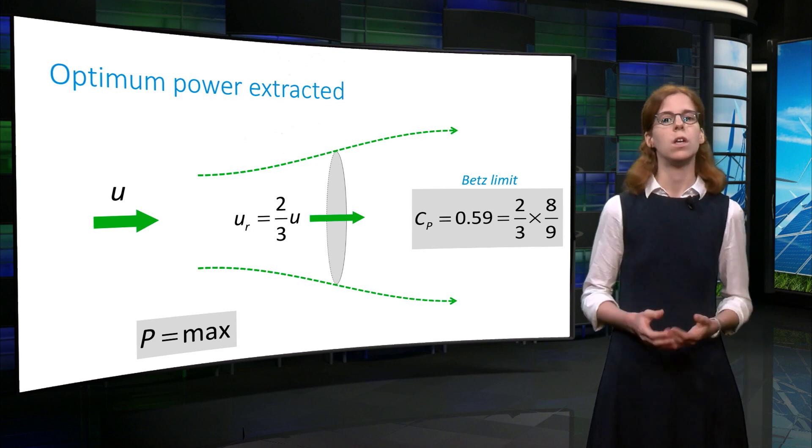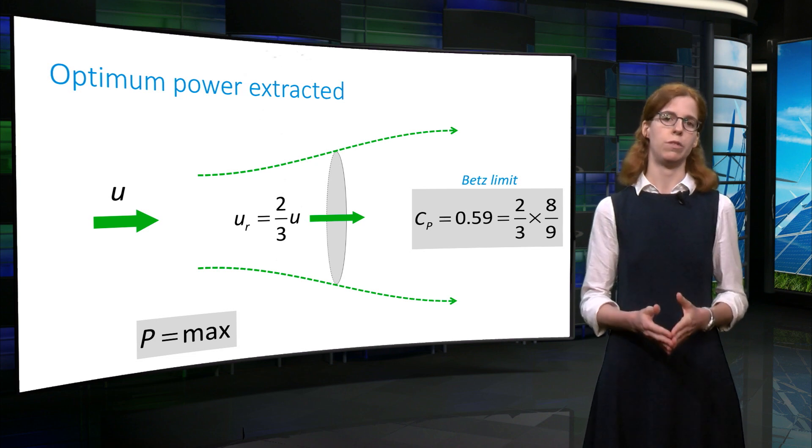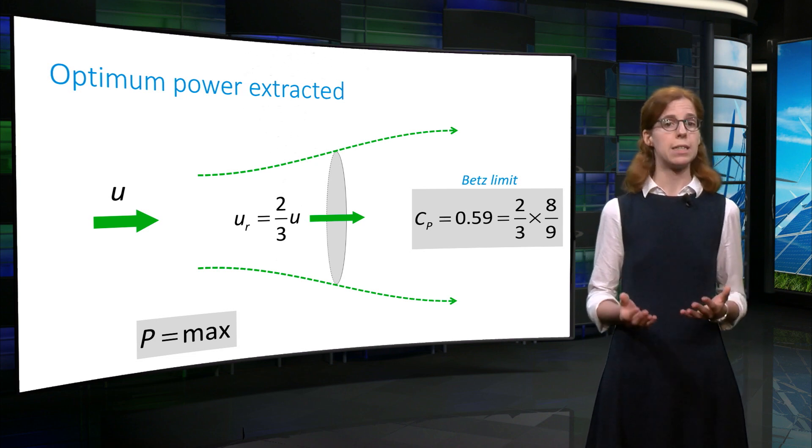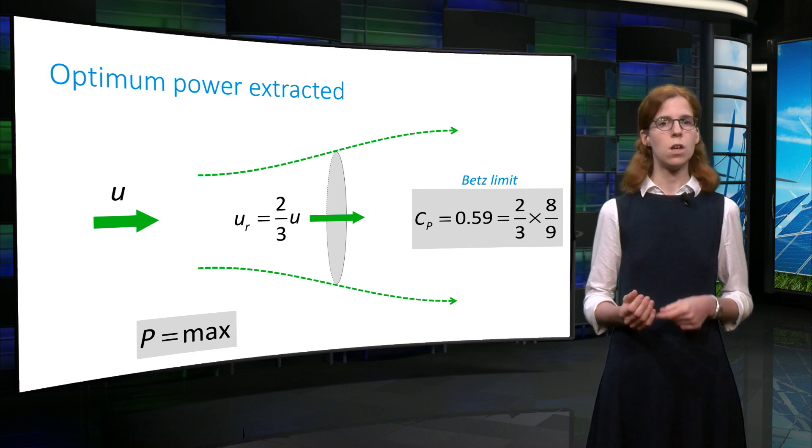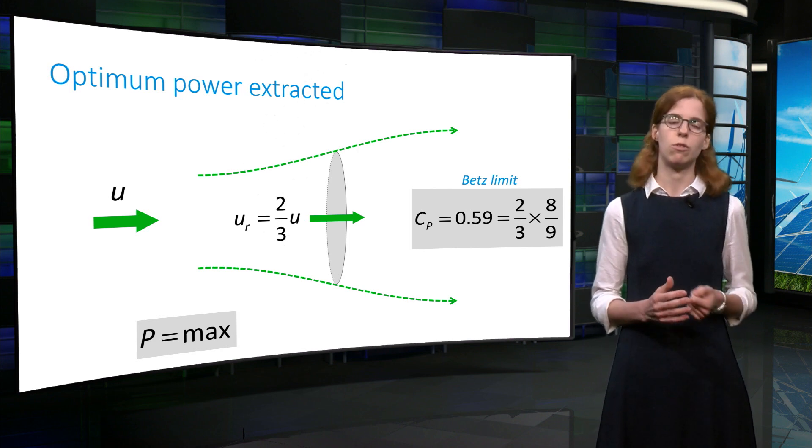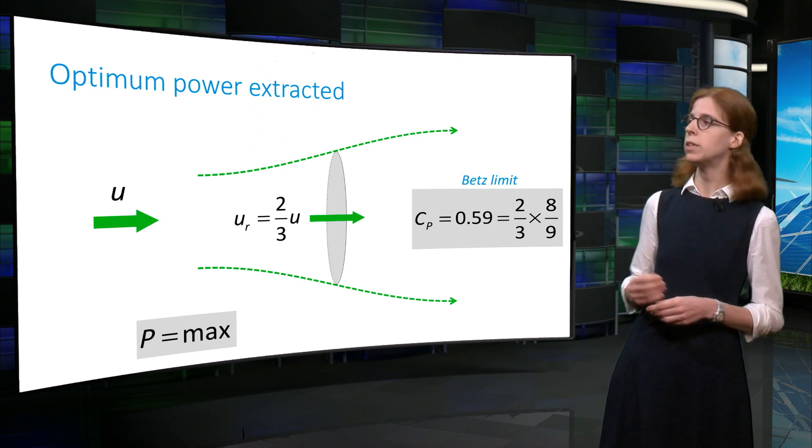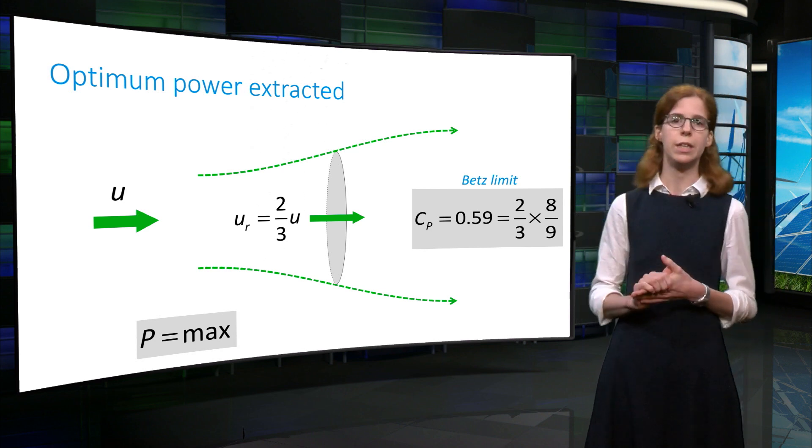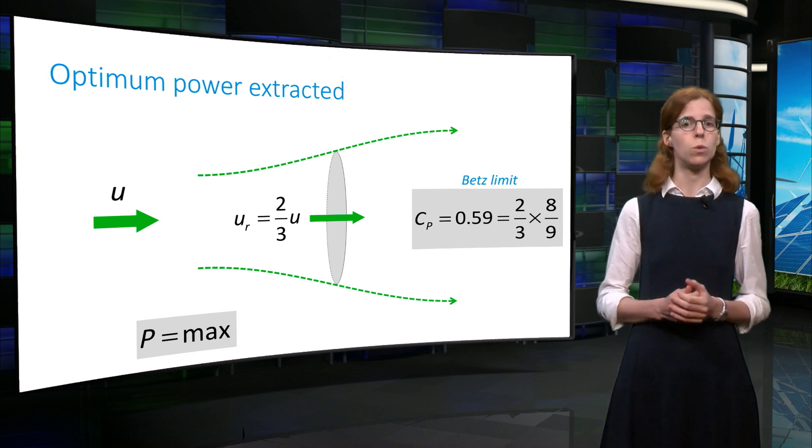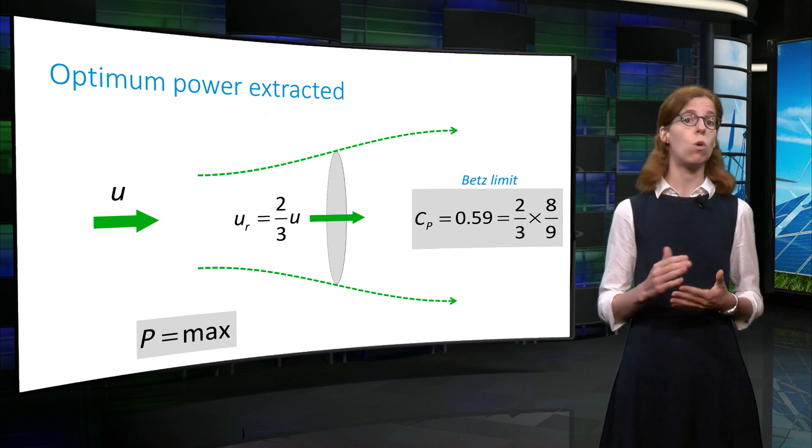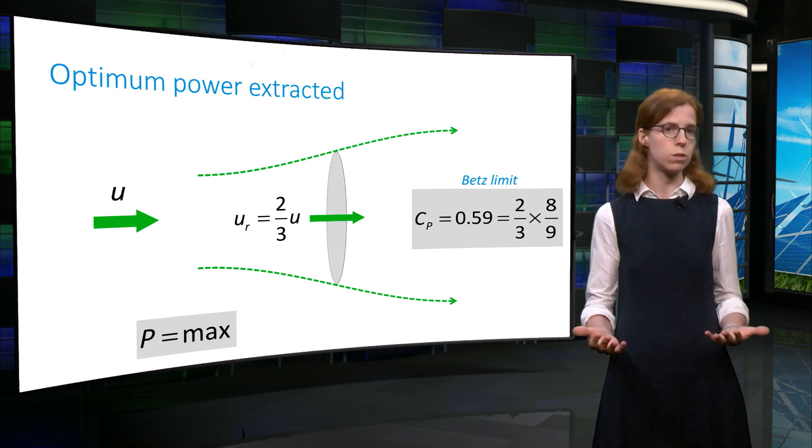In other words, the non-dimensionalized power coefficient is 0.59. This is called the Betz limit. Without going through the details of the mathematical derivation, this limit is obtained by multiplying two-thirds of the velocity with eight-ninths of the force. It gives a ratio of 16 over 27 which equals 0.59.